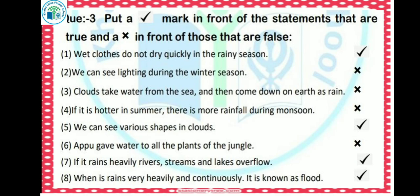Fifth: we can see various shapes in clouds — this is true, we can see many different shapes in clouds. Sixth: Appu gave water to all the plants of the jungle — this is false. Seventh: if it rains heavily, rivers, streams and lakes overflow — this is true, which is called flooding.